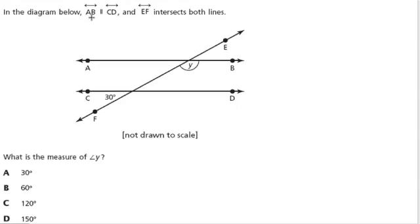In the diagram below, AB - this symbol right here means line AB is parallel to line CD, and line EF intersects both lines.